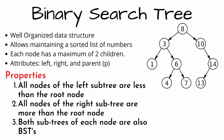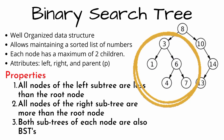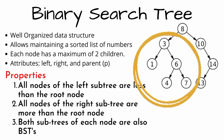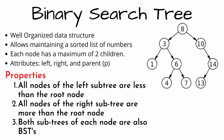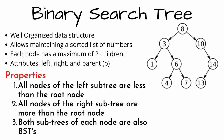Now coming to the properties of the binary search tree: the first property is that all the nodes of the left subtree are less than the root node. The second property is that all the nodes of the right subtree are greater than the root node — that is, the values in the right subtree contain values which are greater than the root node.